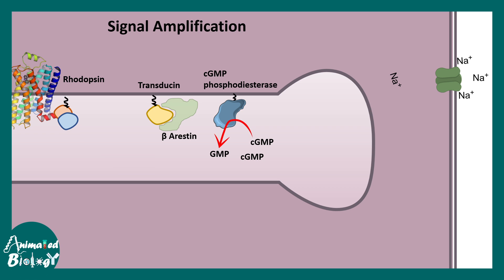When light is withdrawn or there is prolonged darkness, beta-arrestin prevents the G protein from interacting with cyclic GMP phosphodiesterase. In this case, guanylyl cyclase becomes active, reproducing cyclic GMP molecules, which again triggers sodium ion influx and allows the neurons to fire. This is the recovery mechanism in darkness.